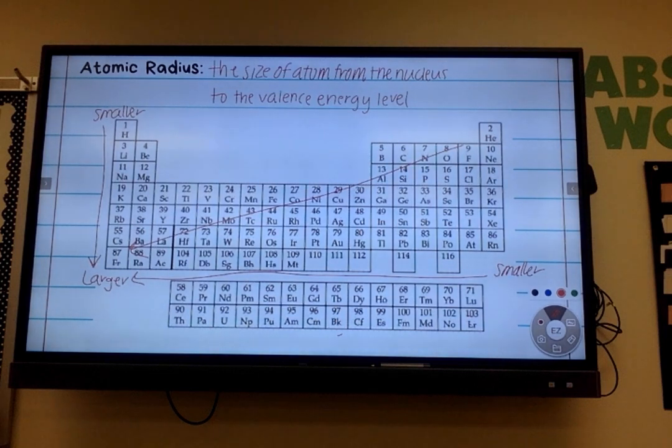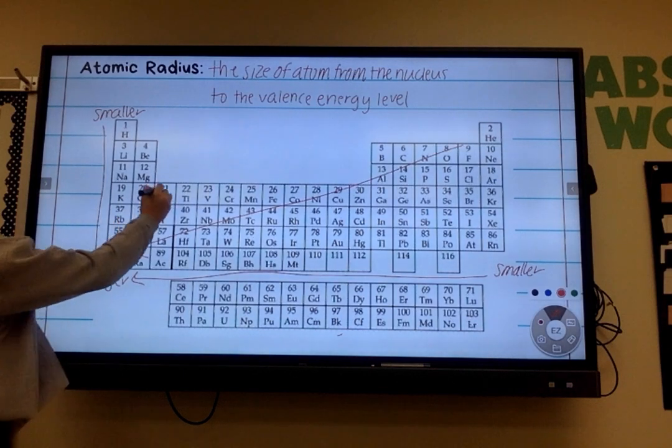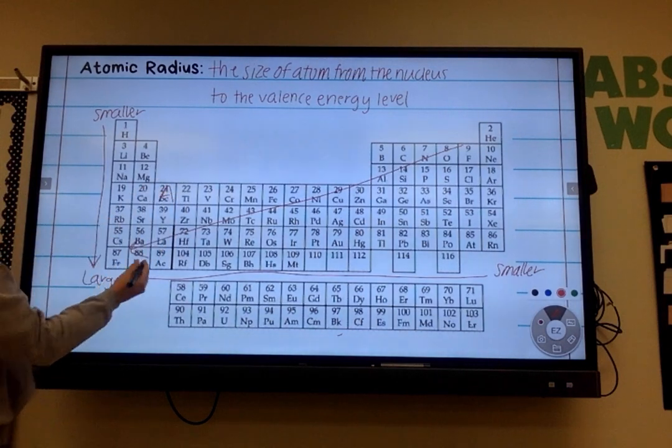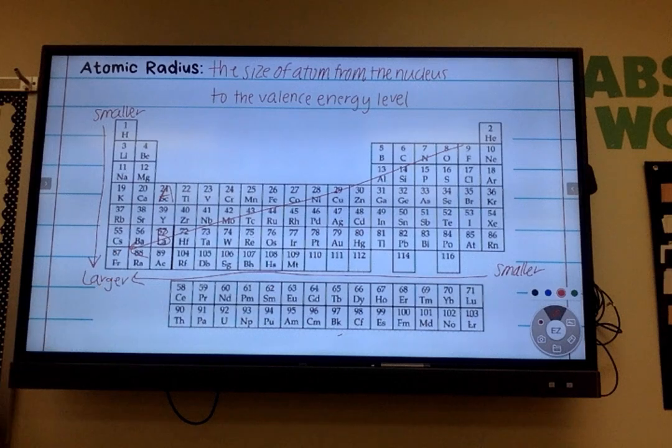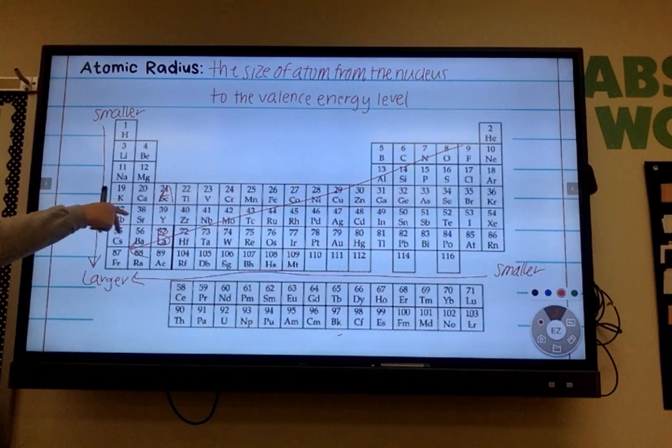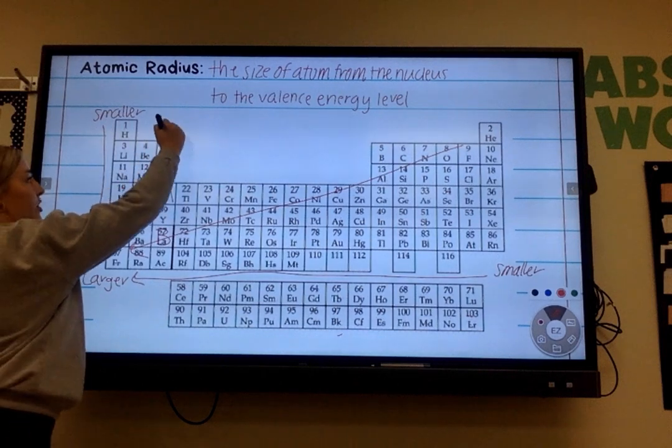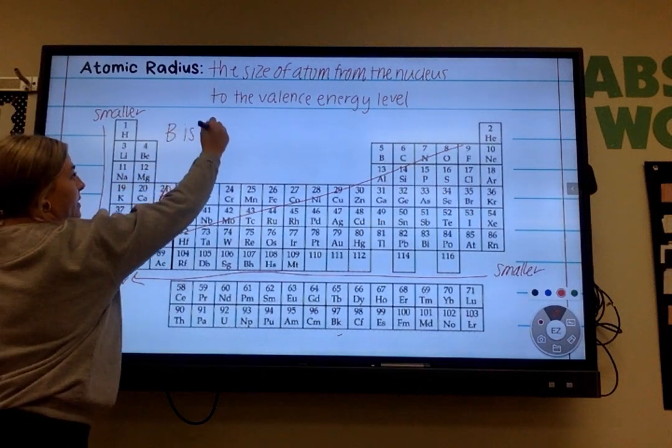So we're going to pick a couple of different elements to use as our examples. I want you to put an A over Sc and a B over La. If I gave you those two elements or if I gave you a blank periodic table with just an A and a B on there, you should be able to tell me which one has a bigger atomic radius based on these trends or the arrows. So if I'm looking at just A and B, and I'm also looking at these arrows, which one is bigger? B. So make sure you write down B is bigger than A.